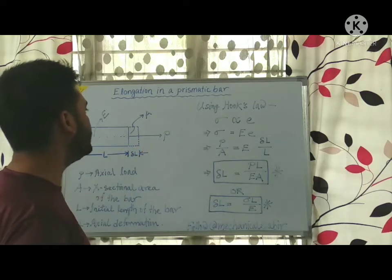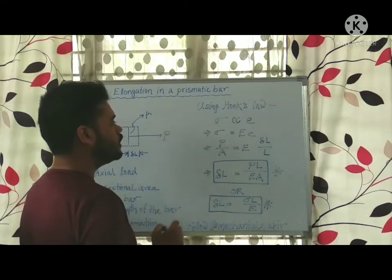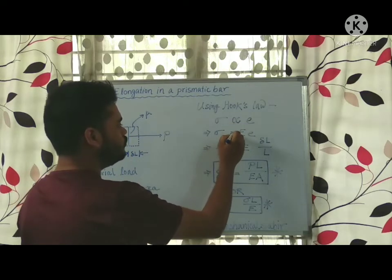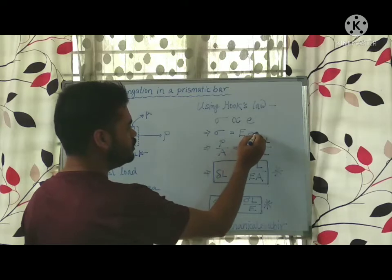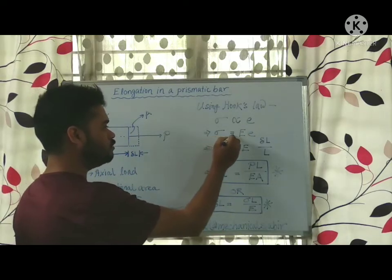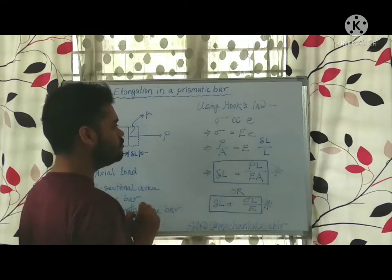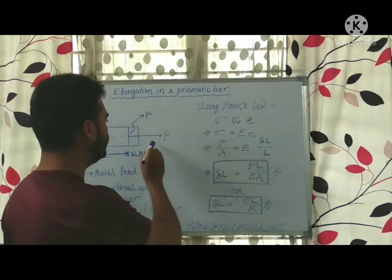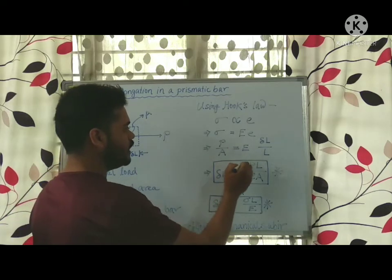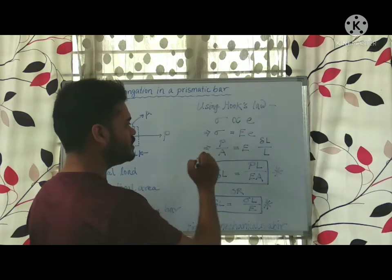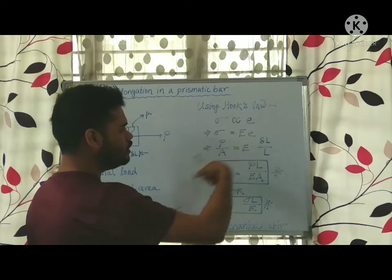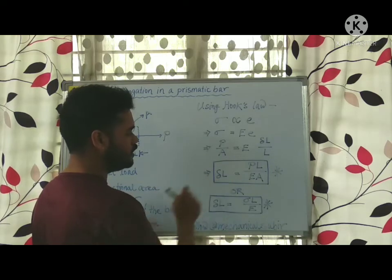Using Hooke's Law, we can write that stress is proportional to strain. Sigma is your stress and e is your strain. If we multiply one constant — that is nothing but your Young's modulus — then sigma is equal to capital E times small e. Sigma is force per unit area, so P upon A is your sigma. Strain is the linear strain, that is axial deformation delta L upon its initial length capital L. Cross-multiplying, axial deformation delta L will be PL upon AE.